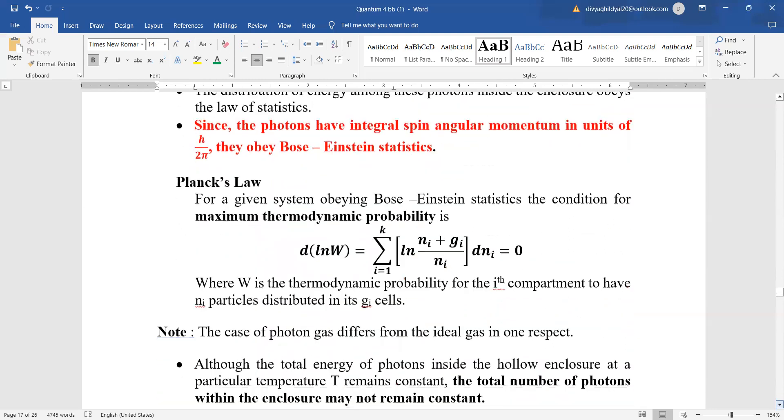Since the photons have integral spin angular momentum in units of h upon 2 pi, they are going to obey the Bose-Einstein statistics or the bosons. You can refer to previous lectures for this.